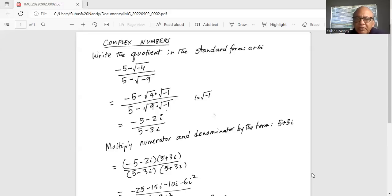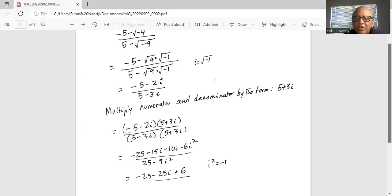Now in order to simplify this, we will multiply the numerator and denominator by the conjugate of the denominator. By conjugate, I mean the same terms as in the denominator. Only difference is instead of minus 3i, we are going to multiply by the numerator and denominator by the conjugate of 5 minus 3i, which is 5 plus 3i.